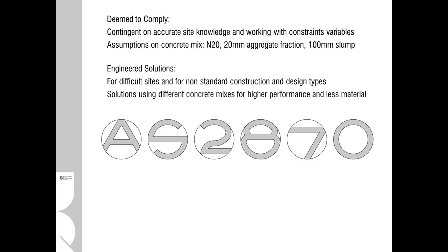Now in just a quick summary again of AS2870, it always assumes accurate site knowledge and working within a certain set of constraints and variables. For example there's always an assumption on the concrete mix that it's going to be an N20 with a 20mm aggregate fraction and a 100mm slump which is a standard delivery concrete. Engineered solutions are required for difficult sites, for non-standard construction and design types and also solutions using different concrete mixes say higher performance, higher strength concrete. So although AS2870 can provide a lot of generic engineering solutions, by and large with architectural design work which tends to sit outside the norm you would tend to find that you're going more to an engineer to provide the solutions for the slab and footing.